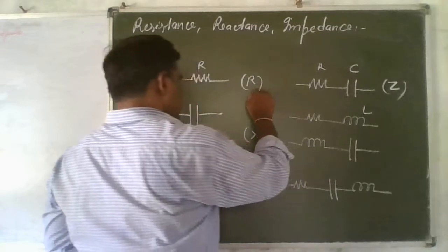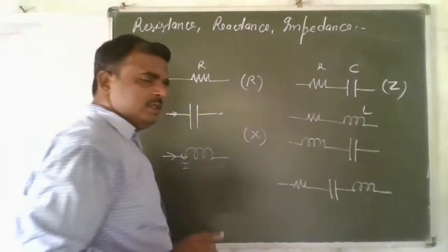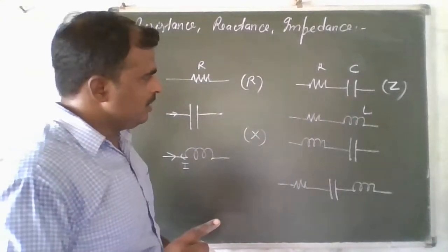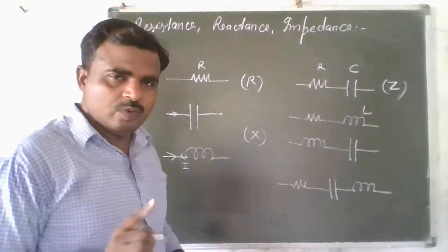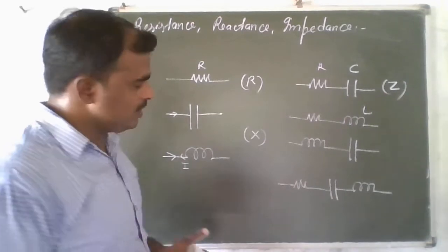The impedance is represented by Z. The units of resistance, reactance, and impedance are all ohms, because essentially these are all forms of opposition to current flow.